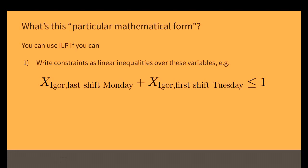You get to use ILP if two conditions hold. Condition number one: all the constraints in your problem must be writable as linear inequalities over these variables. For example, if one constraint is we don't want to make people close the store one night and then immediately open it the next morning, you would write it like this: X_Igor_last_shift_Monday plus X_Igor_first_shift_Tuesday is at most 1. This represents that constraint accurately because these are 0,1-valued variables — what the constraint is saying is both of these assignments cannot be true simultaneously.